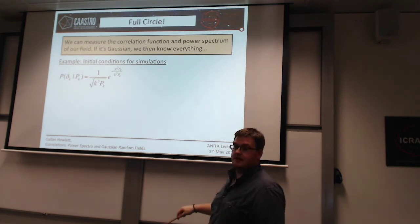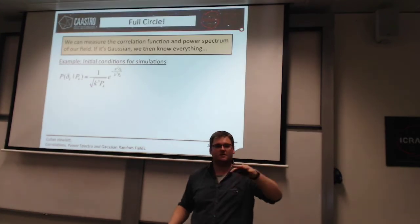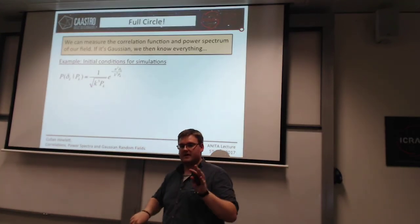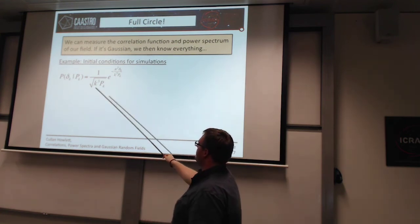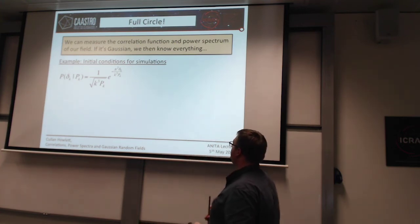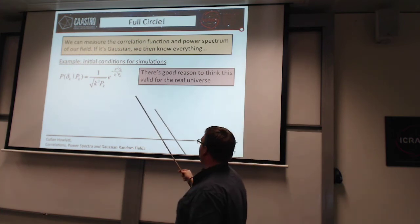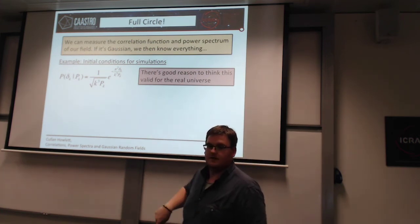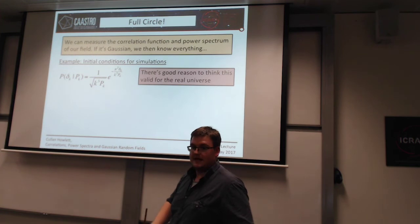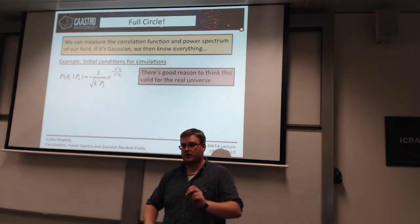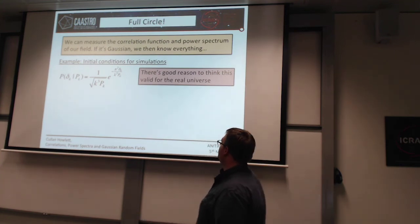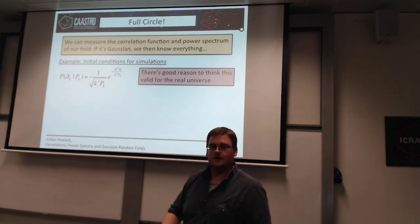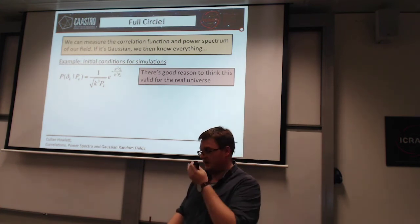This is exactly what we do for galaxy simulations — you ask, how do I set up initial density perturbations? We just take some power spectrum based on the real universe and generate a bunch of over-densities from it. There's good reason to think this is valid for the real universe: the universe is actually Gaussian, due to arguments from inflation, and this was confirmed by Planck, which measured very little primordial non-Gaussianity. And ultimately this drops out from the central limit theorem — given enough perturbations, you'll get a Gaussian distribution.